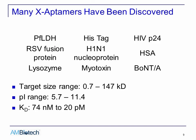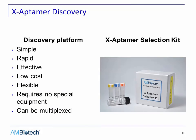X-aptamers have been generated to a long list of targets, many of which are biomarkers for infectious diseases, but there are also a couple of toxins. These targets range in size from the sub-kilodalton histag to the almost 150 kilodaltons of botulinum toxin A. The targets differ significantly in terms of pI — both acidic and basic proteins can be targeted. The affinities of X-aptamers for these targets range from 74 nanomolar to 20 picomolar. The X-aptamer discovery platform is simple, rapid, effective, low-cost, flexible, requires no special equipment, and can be multiplexed.